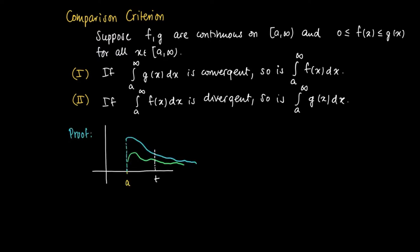A proof goes as follows. Here's the typical picture. We have an element a in R, and the blue line is the graph of g, and the green line is the graph of f. If we take an arbitrary value t, then the integral from a to t f(x)dx is smaller or equal than the integral from a to t g(x)dx.